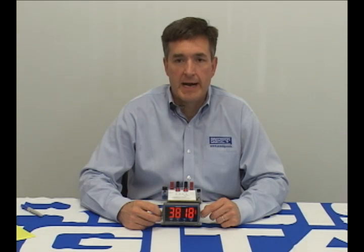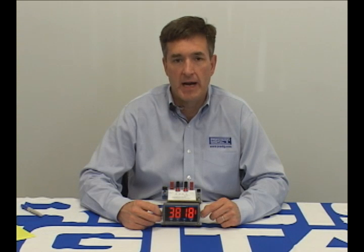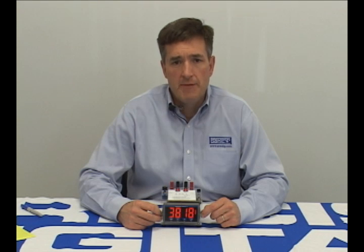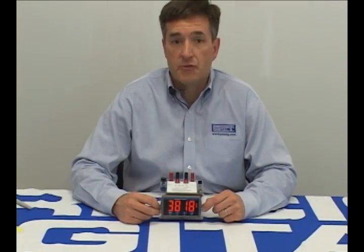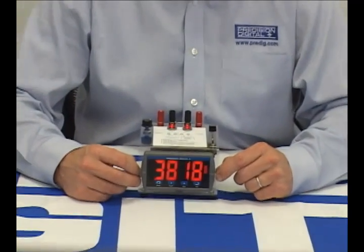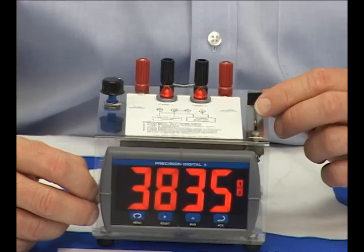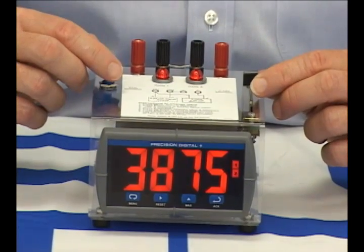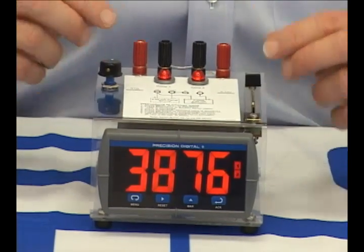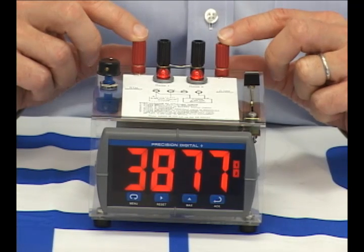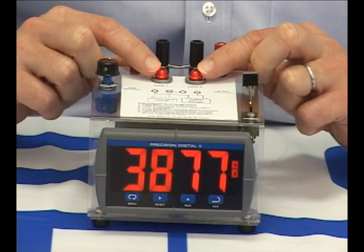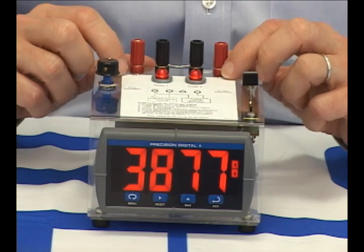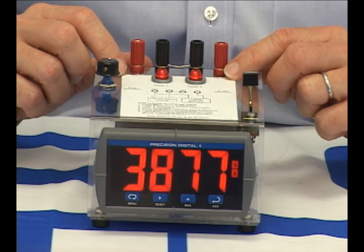One of the tools we provided our distributors with to help them show you the new supersized Trident X2 is the Trident X2 demo that I have here. If you would like to see a Trident X2 in person, just give your local precision digital distributor a call. The Trident X2 demo has a built-in slide wire to simulate a voltage input and a potentiometer to simulate an RTD input, or you could even connect a transmitter to these terminals here. You'll notice that the Trident's two relays are connected to these lights, and the demo also contains a convenient header for connecting the serial adapter so you can connect the Trident to a PC.